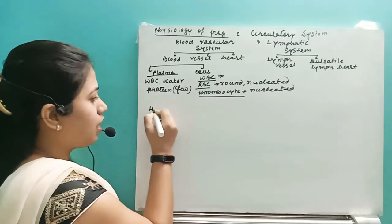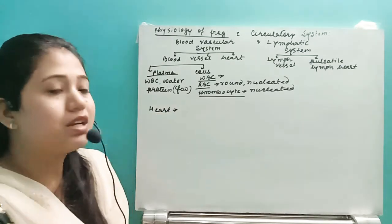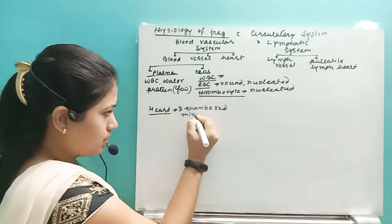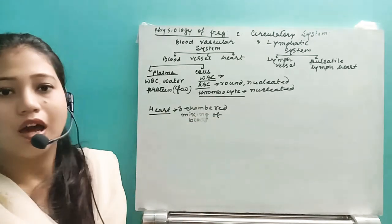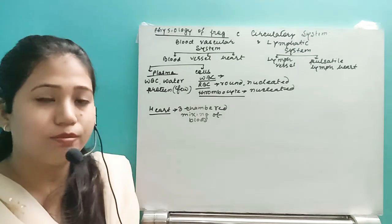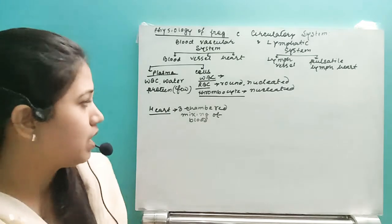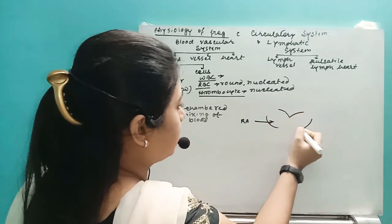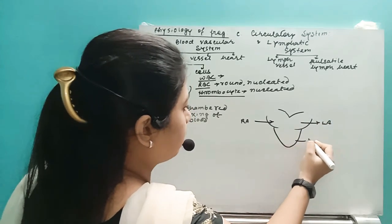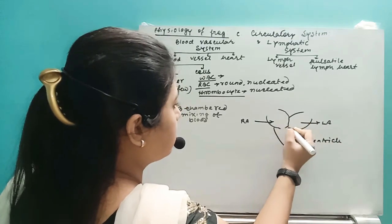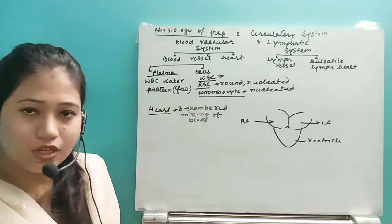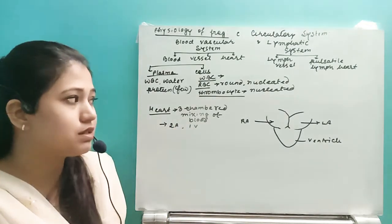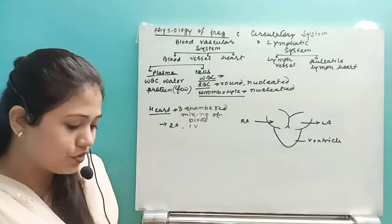Now let us look at the structure of the heart. The frog has a three-chambered heart. Mixing of oxygenated and deoxygenated blood occurs here. The heart has two auricles — right auricle and left auricle — and a single ventricle. The two auricles are separated by the inter-auricular septum.